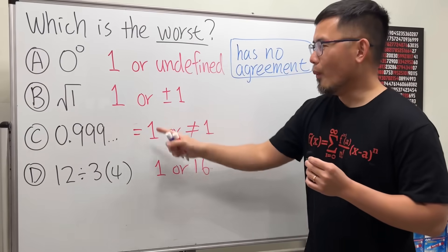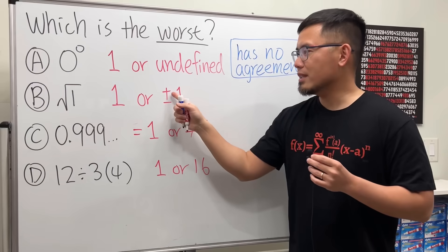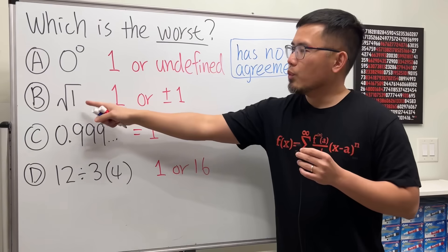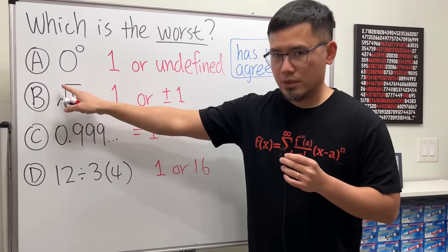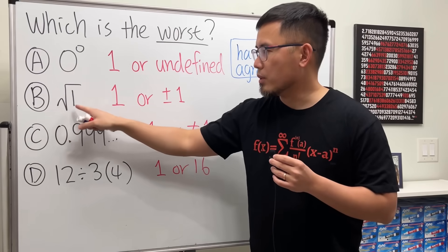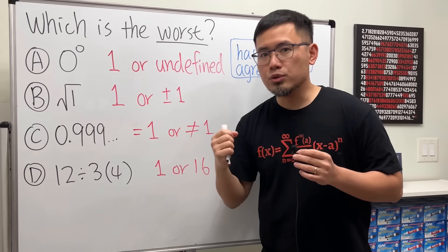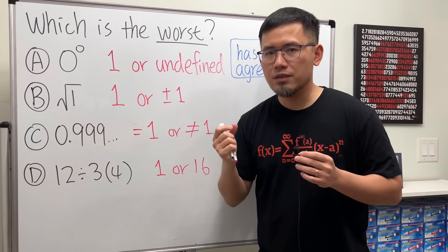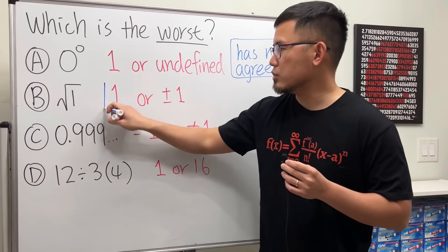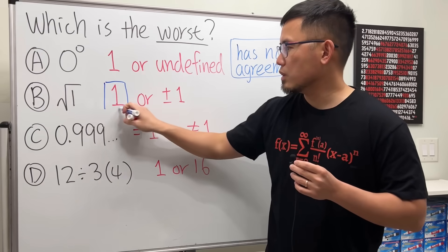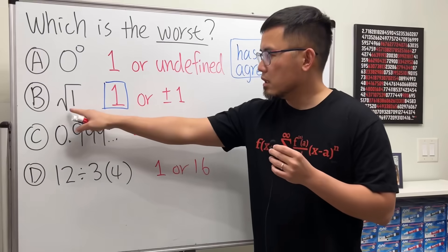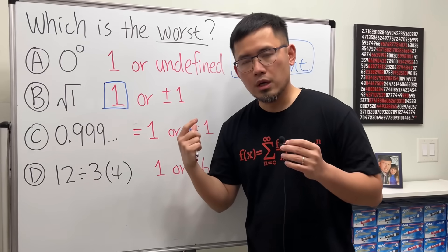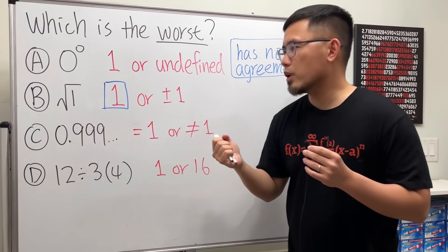Next: square root of one — is it one, or do we say plus or minus one? When you have just the square root symbol with a one, you're supposed to give the positive answer. So the answer is just one — this is the positive square root, or the principal square root.